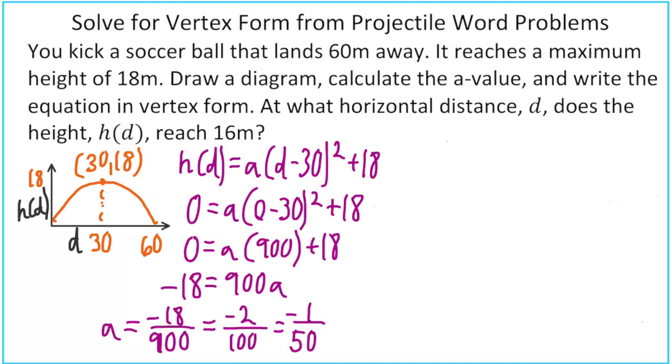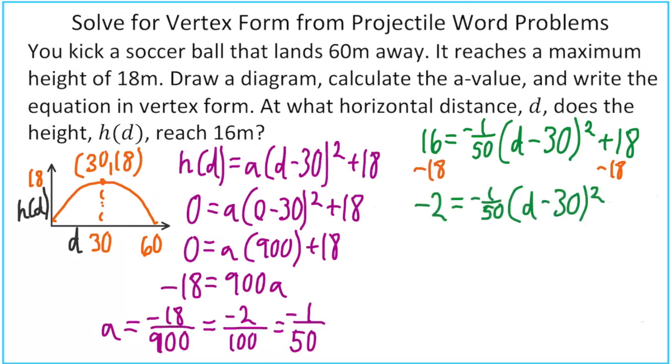Next up, we're going to solve for the horizontal distance, given the height of 16. So this time, we have 16 equals the negative 1/50. And we're missing the d value inside the parentheses. So this will be solved a little differently than the last one. First, we'll subtract 18 from both sides. That gives us negative 2.